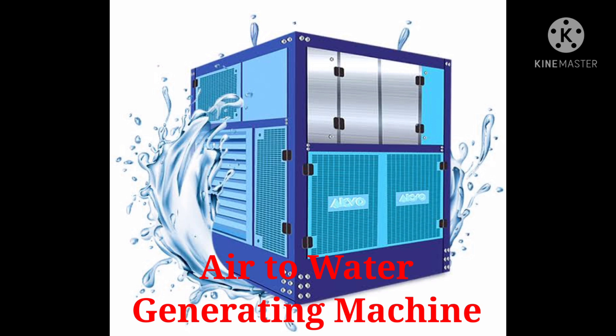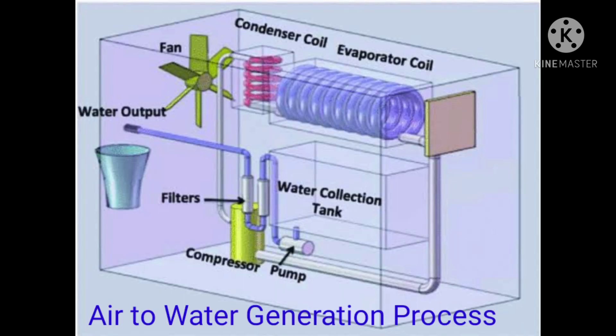Atmospheric water generators replicate this natural process of condensation by controlling the dew point. Dew point temperature means the temperature at which water vapor converts into moisture, which allows it to make water continuously even in low humidity conditions.